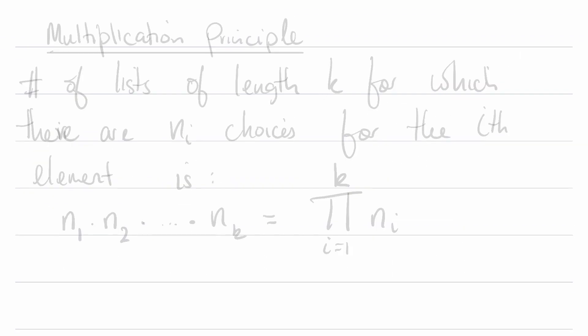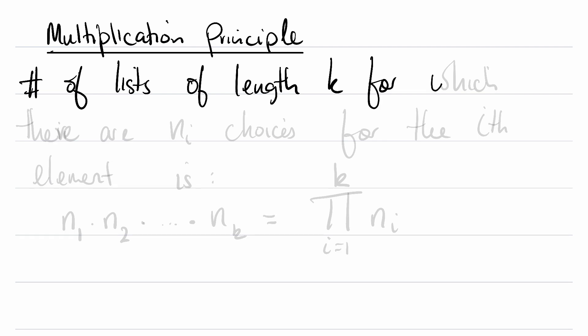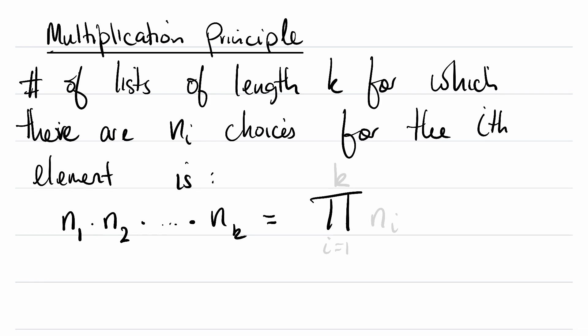This was just by way of an example to introduce what hopefully will feel a little bit natural, which is the multiplication principle. The number of lists of length k for which there are n_i choices for the ith element is n_1 times n_2 times dot dot dot times n_k, which in product notation is the product of n_i as i ranges from 1 to k. Here i is our dummy variable and k is the length of the list.